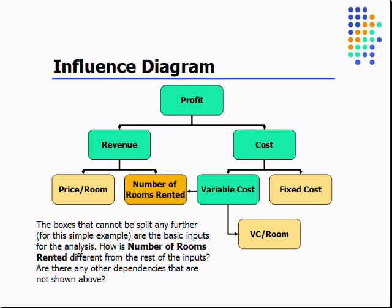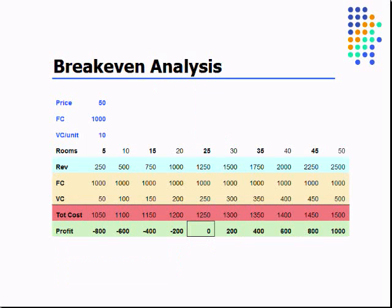So how do we figure out what the break-even is in a scenario like this? Well, we can certainly do a simple table like this that calculates it all out. We would have our price of our room, our fixed cost, and our variable cost, and we could just do a simple table where we take the number of rooms that could potentially be rented.